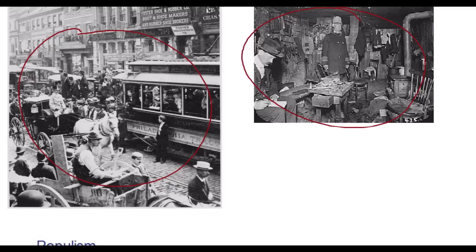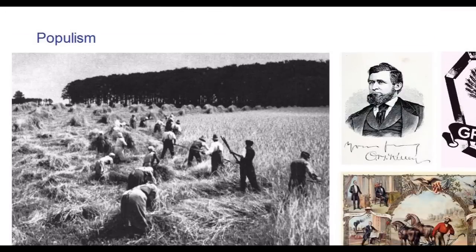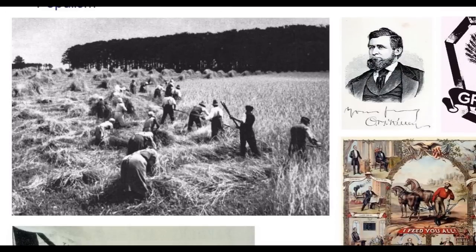Reform movements — particularly the populist and the progressive reform movements — appealed to different segments of the American population. They took very different approaches to addressing the social, political, and economic problems caused by industrialization, changes in American political life, and changes in American cities. We'll begin by focusing on the populist movement, how it came about, who was interested in it, and its impact.